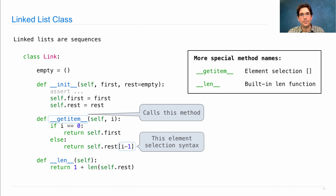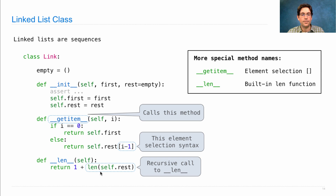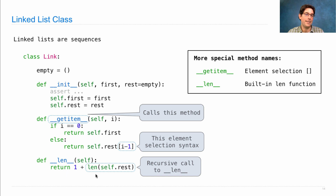Computing the length is even simpler. The length of a linked list is one more than the length of the rest of the linked list — a simple recursive definition. This is implicitly a recursive call to len. The built-in len function, when passed a user-defined instance, just looks up the __len__ method and invokes it, because it doesn't know how to compute the length of anything, so it has to ask the object itself. The base case is that link.empty is reached somewhere down the list, and the length of empty is 0 — that's a built-in property of the empty tuple. By using a zero-length sequence, we get a very succinct definition of the __len__ method.